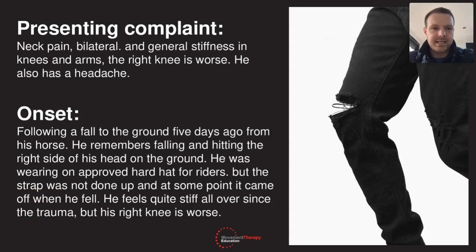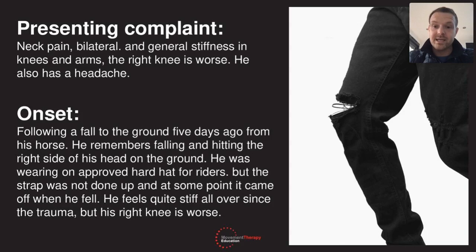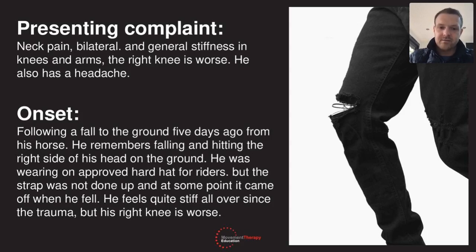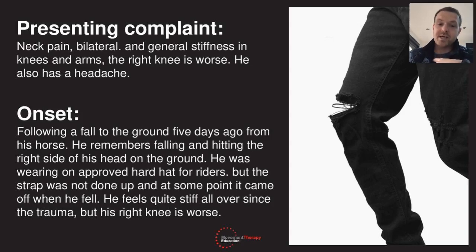His presenting complaint: he has neck pain bilateral — both sides of his neck — and general stiffness in his knees and arms, with the right knee worse. He also has a headache. This started following a fall to the ground five days ago from his horse. He remembers falling and hitting the right side of his head on the ground. He was wearing an approved hard hat for riders but the strap was not done up, and at some point it came off when he fell. He feels quite stiff all over since the trauma, but his right knee is worse.